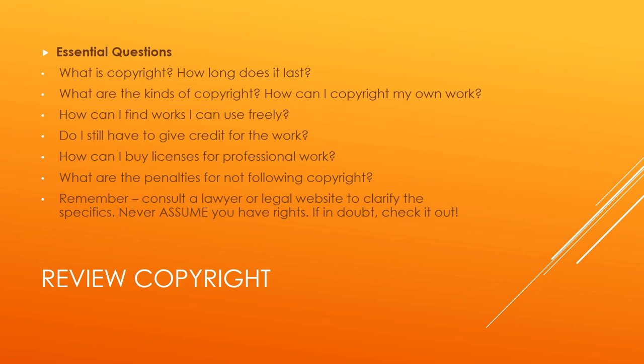Today we've covered what is copyright and how long it lasts, the kinds of copyright, and how to copyright your own work. Remember your apps and other things you post online — you should copyright them. If it's not stated, it's all rights reserved and you must obtain permission, so be especially careful with those. How can you find works you can use freely? We used Google and Flickr, but remember you can use all kinds of websites. Do you still have to give credit? Of course — give attribution, the name linked to the website. We learned how to buy licenses for professional work, and remember you can always contact an author to get permission. We also learned about the penalties for not following copyright. Consult a lawyer or a legal website to clarify the specifics — we're just covering generalities here and I'm not offering legal advice.